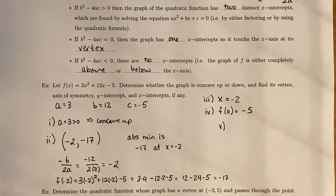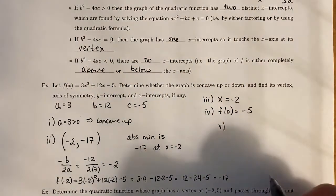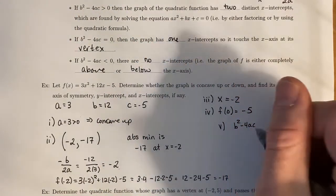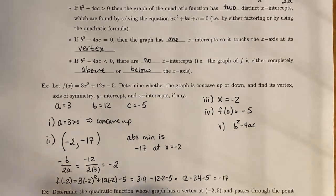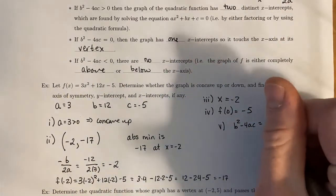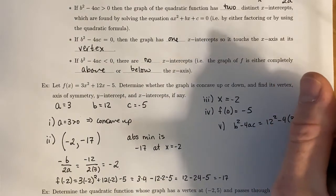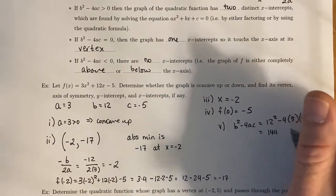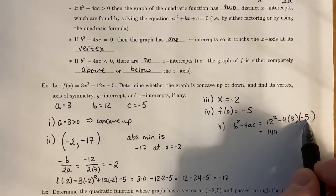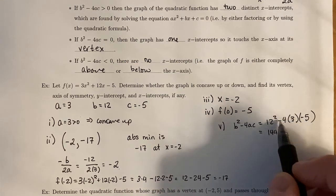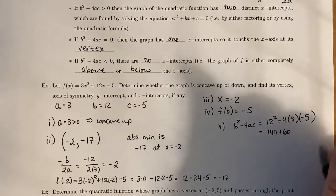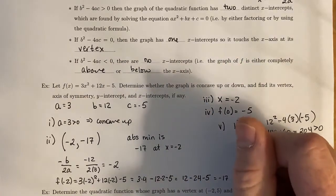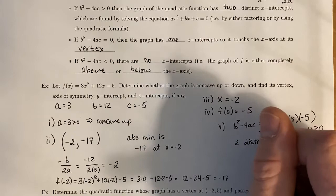Now we need to find the x-intercepts. First, we use B squared minus 4AC to determine how many x-intercepts we have. B was 12, A was 3, and C was negative 5. We get 144 for B squared. 4 times 3 times negative 5: 4 times 5 is 20, times 3 is 60, and the double negative gives us plus 60. So B squared minus 4AC equals 204. Because this is positive, we know we have two distinct zeros.